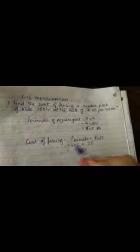Now we have to find the cost of fencing. Fencing will be the perimeter into the rate. Now the perimeter is 600 and the rate is rupees 25 per meter. So 600 into 25. First I put the 2 zeros, then I will multiply 6 by 25.